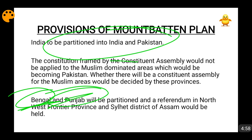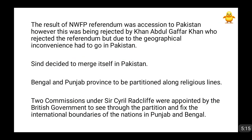Sir Cyril Radcliffe was appointed to draw the partition boundaries. Also, it was said that a referendum would take place in the North-Western Frontier Province and the Sylhet district of Assam. When the referendum took place in the North-Western Frontier Province, the result was that it would be acceded to Pakistan.